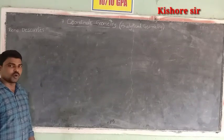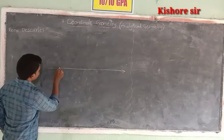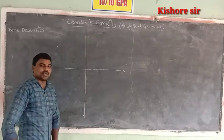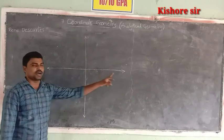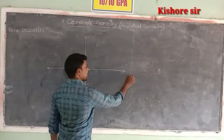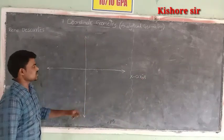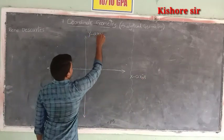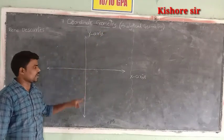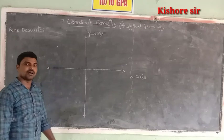In a plane, there are two lines. One is a horizontal line and another one is a vertical line. The horizontal line is called the x-axis and the vertical line is called the y-axis. These two axes meet at a point.